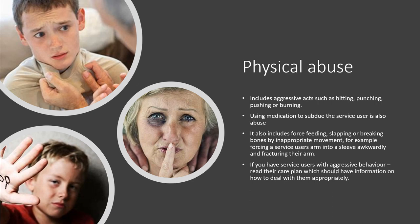A form of physical abuse is also using medication to subdue the service user. For example, a dementia patient who regularly cries out at night — if a nurse gives medication to sedate the patient without it being requested, this is a form of abuse. Physical abuse can also include force feeding, slapping, or breaking bones by inappropriate movement, such as forcing a service user's arm into a sleeve awkwardly and fracturing the arm. If you have a service user with aggressive behaviour, you should not retaliate aggressively — read their care plan and use strategies in place to support them without harm.